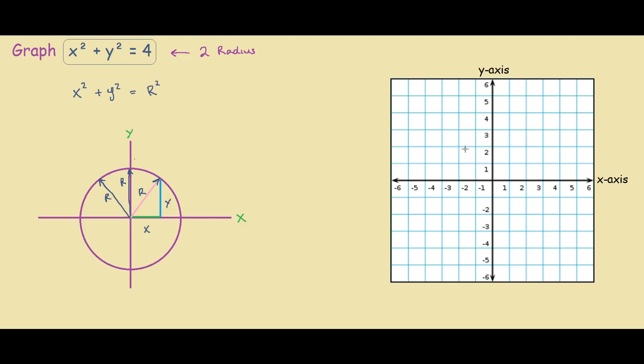When we graph this equation, it will look like this. This is a circle with origin 0, 0, and a radius of 2.